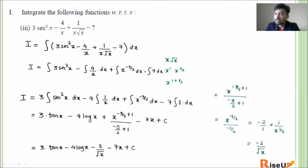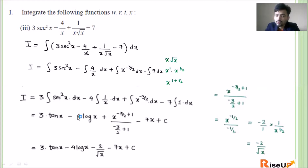For x^(-3/2): using the power formula, x^(-3/2 + 1) upon (-3/2 + 1) = x^(-1/2) upon (-1/2). This equals -2 · x^(-1/2) = -2/√x. Since there is a plus sign before this term and the result is -2/√x, it becomes minus 2/√x. So the final answer is: 3 tan x - 4 log x - 2/√x - 7x + c. This is the answer to the third question.